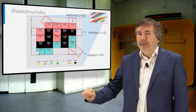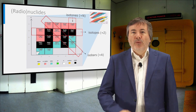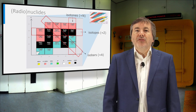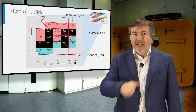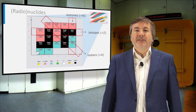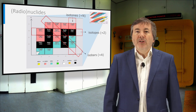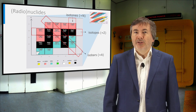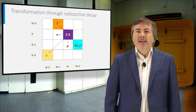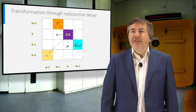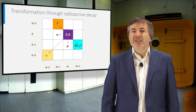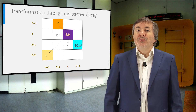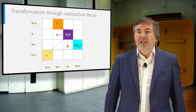Here we see a detail. The isotopes of one element are arranged in horizontal lines. The isotones are in one column, and the isobars on a diagonal. The stable nuclides are indicated in black, and the radioactive ones have a color code. Nuclear scientists often navigate through the nuclide chart to see how one nuclide transforms into another through radioactive decay.